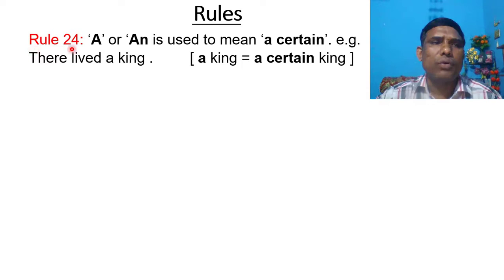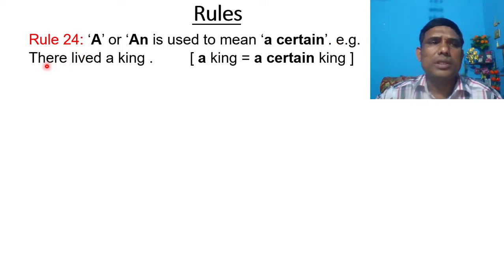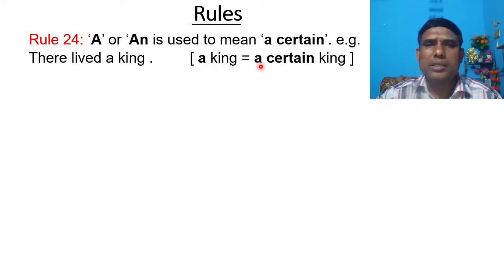Rule number 24: A or AN is used to mean 'a certain'. A or AN is used to mean a certain.